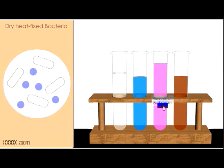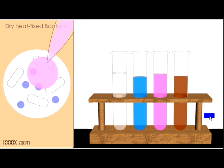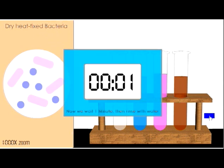So the final step is to add the counterstain safranin, which you can see is a pink or a reddish color. We'll do that, and as in our other staining steps, we're going to need to wait a minute.